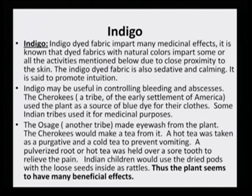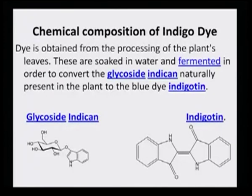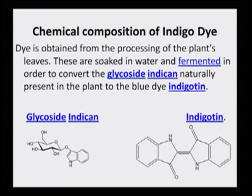The plant seems to have many beneficial effects. Looking at the chemical composition of the glycoside indican and the indigotin, which is the final indigo molecule, the dye is obtained from processing the plant's leaves. They are soaked in water and fermented to convert the glycoside indican naturally present in the plant to the blue dye indigotin. There is an oxidative process where the glycoside is removed and two molecules join at the C-C bond. This is the structure of indigo dye.